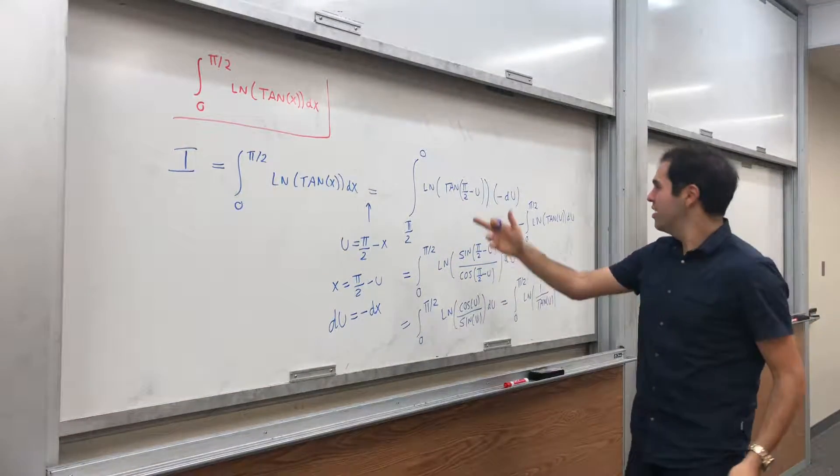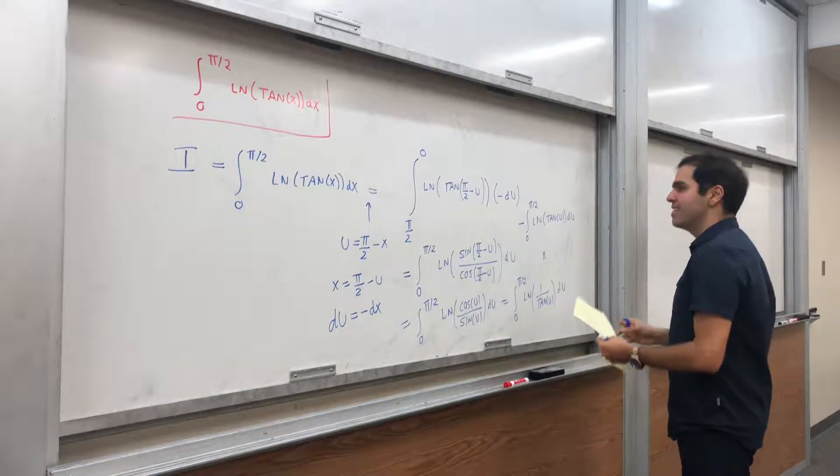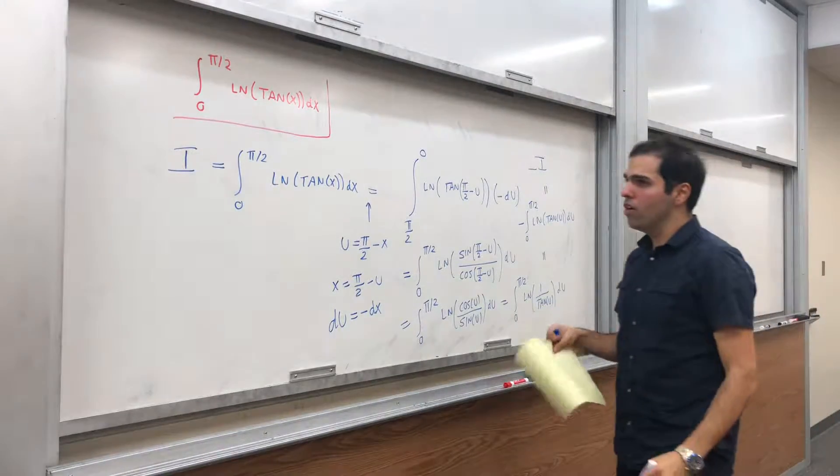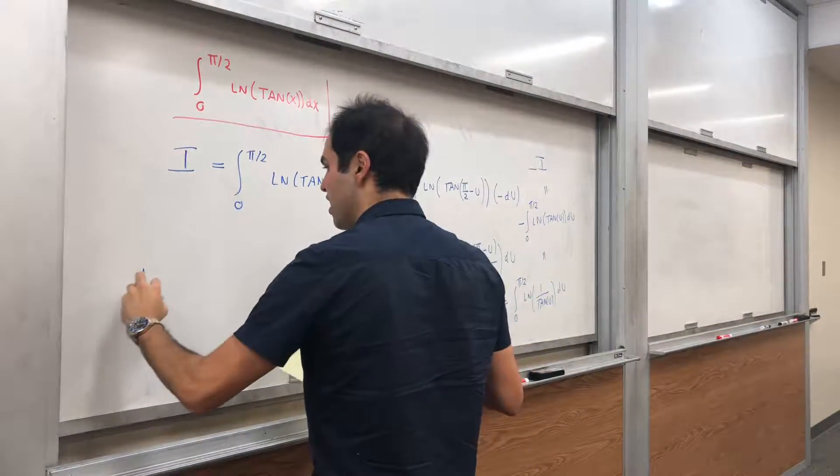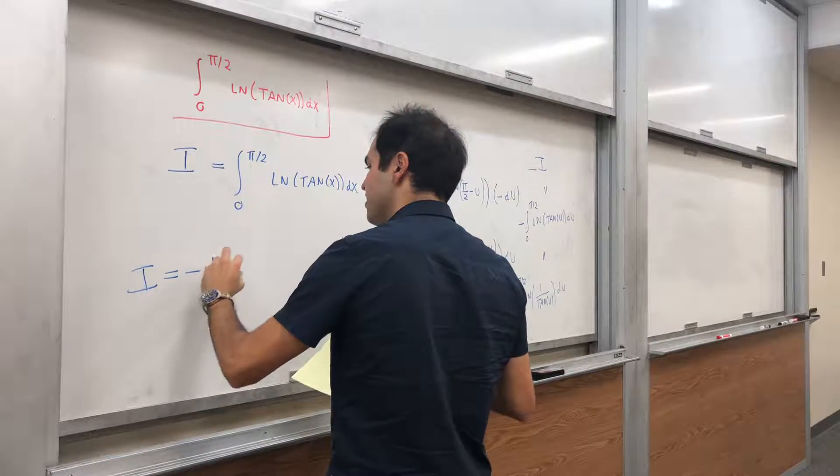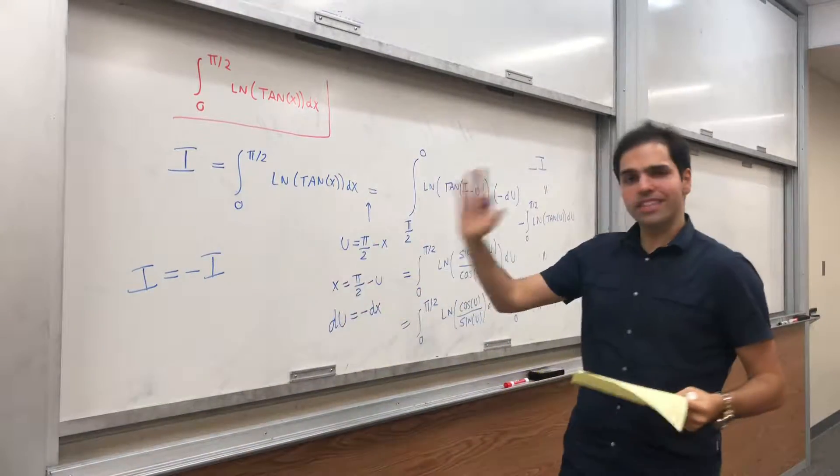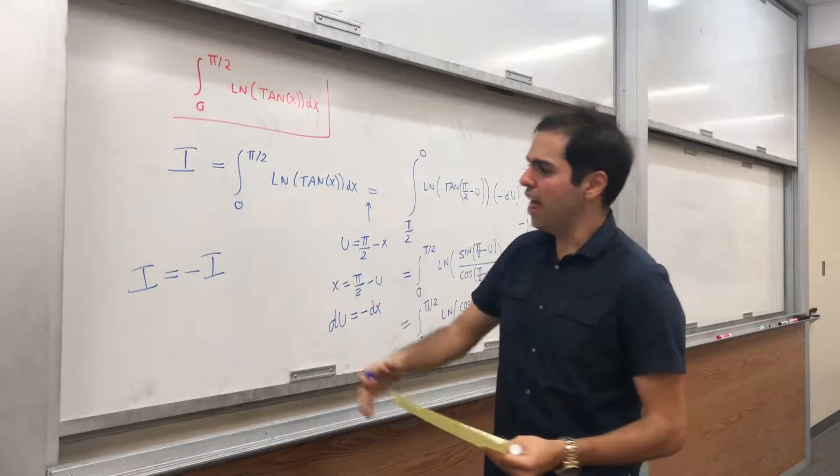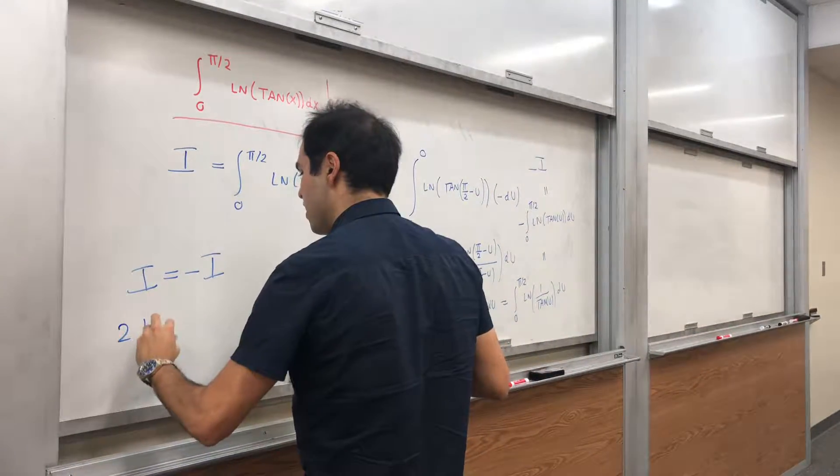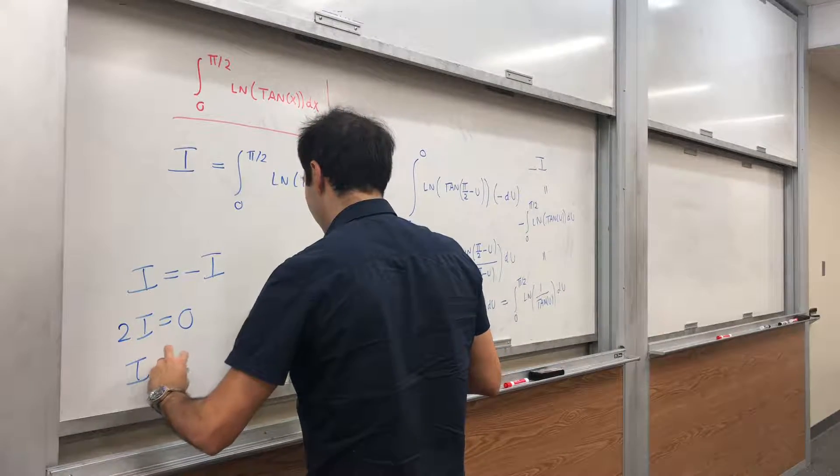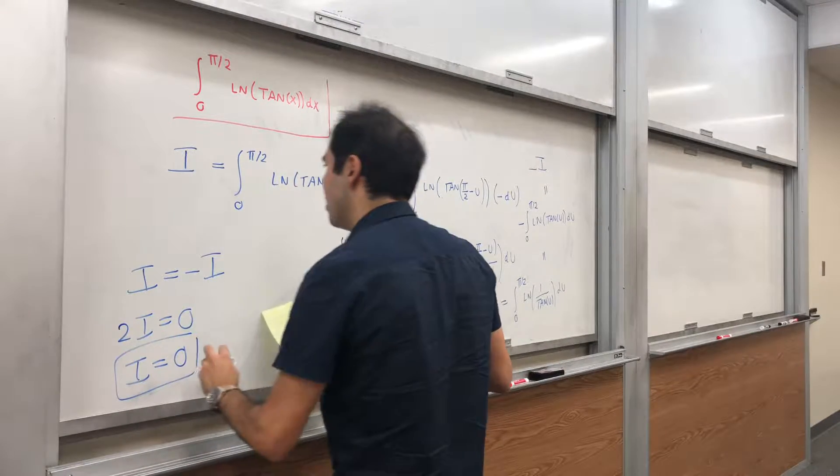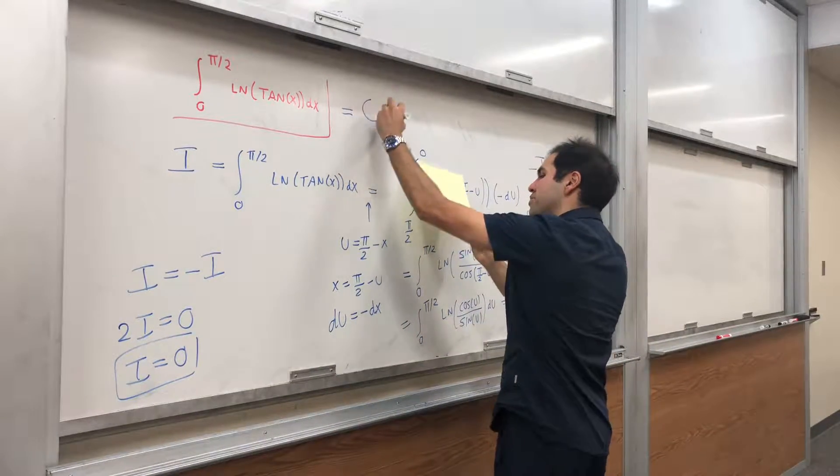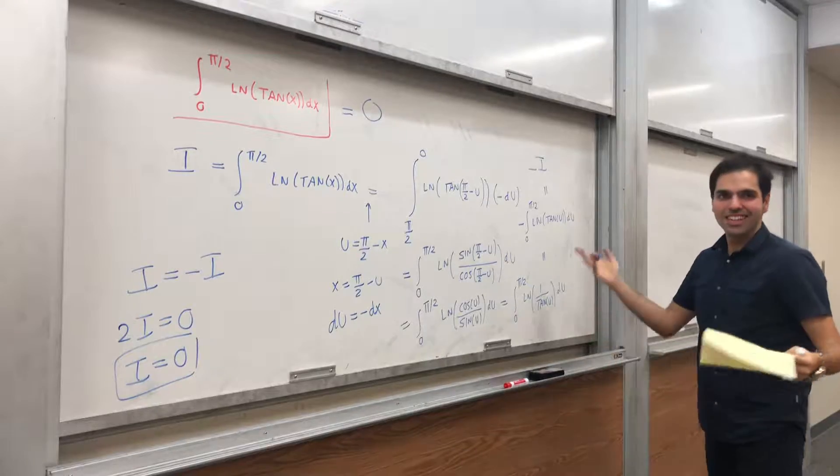And lo and behold, this becomes minus the integral that we want. So minus I. So we get I equals to minus I. And notice, even if I is infinity, that's still OK. We still have that 2I equals to 0. So I equals to 0. In other words, this integral is just equal to 0.